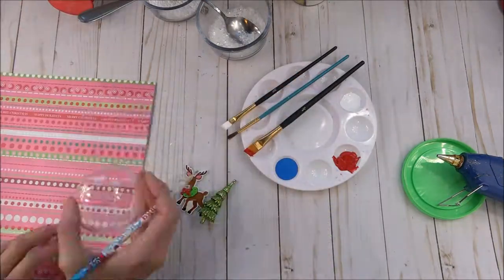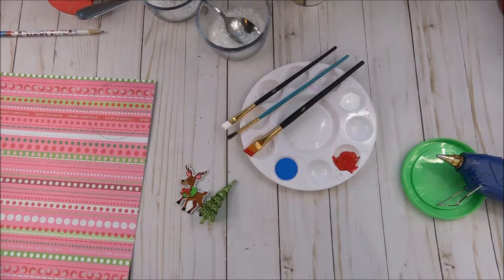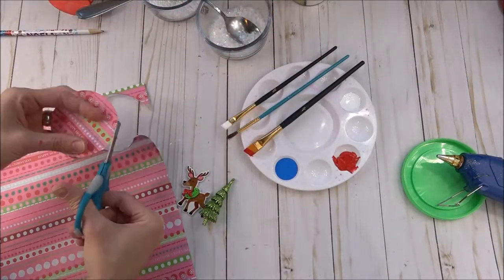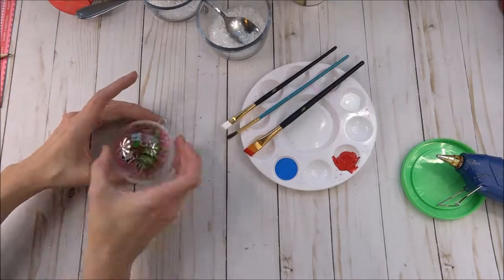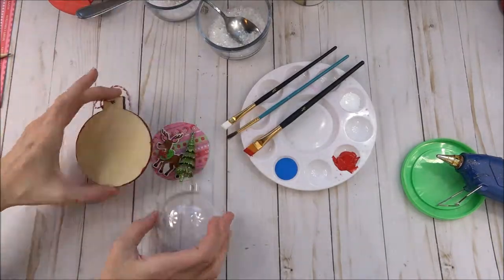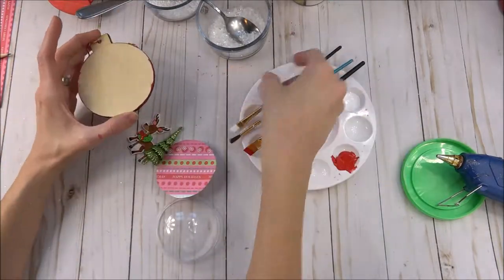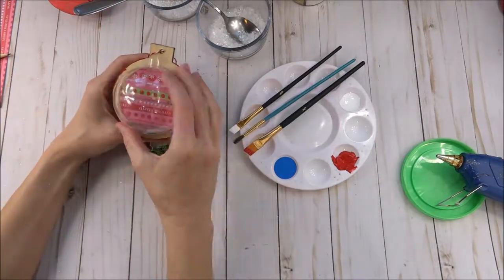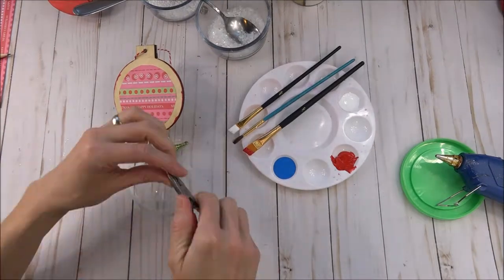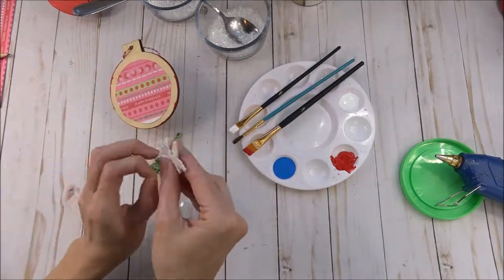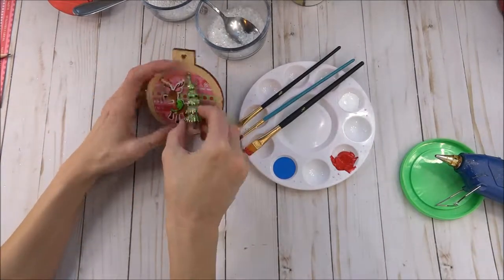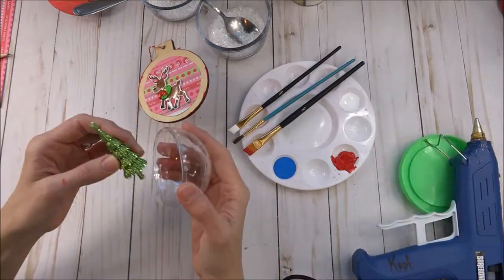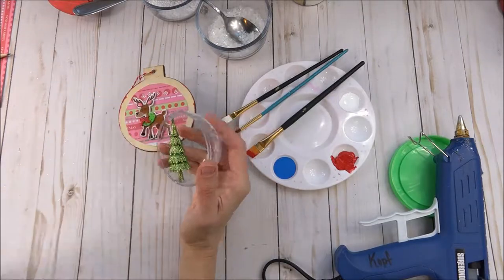For the flip side of our large snow globe ornament, we chose to use a fun, festive reindeer and Christmas tree. To give our snow globe a more 3D look, we glued the glittered Christmas tree on the inside of the dome.